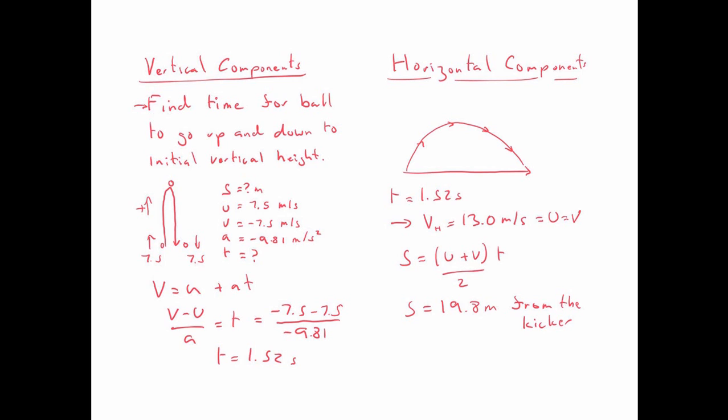Now, looking at the horizontal components, we know that this ball is going forwards with a velocity of 13 meters per second. The time it takes is 1.52 seconds. And remember, that 13, it doesn't change because there's no forces acting in the horizontal plane. So there's no forces, therefore there's no acceleration. So the final velocity, the initial velocity, they're all the same. So we can use S equals U plus V over 2T. So 13 plus 13 divided by 2, well, that's just an average of 13. So 13 times by 1.52, that gives us a final answer of 19.8 meters from the kicker, from whoever kicked the ball.